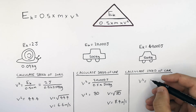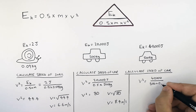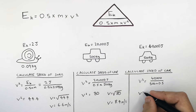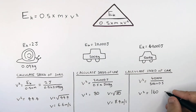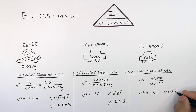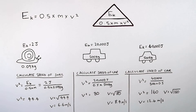V squared equals 40,000 joules divided by 500 kilograms times 0.5, giving V squared equals 160. So to calculate V, you must square root 160. The square root of 160 is 12.6 meters per second. V squared is not your speed — you must always remember to square root it.